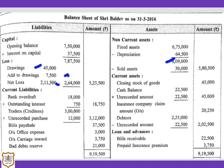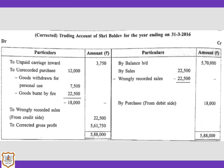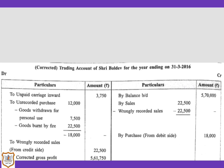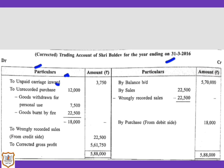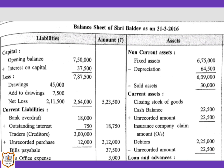Also in adjustment one, unpaid carriage inward of Rs. 3,750 will be shown on the debit side of the corrected trading account, as it is an expense related to purchases for the current year. For the second effect, since this expense is unpaid, it is a liability and will be shown on the liability side of the balance sheet under current liabilities as outstanding carriage inward, amount Rs. 3,750.